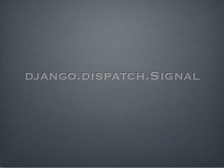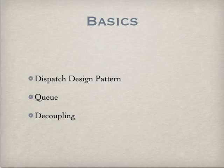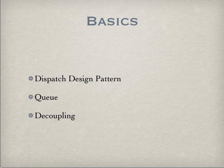In this screencast, we're going to talk about Django's Signals. It's a very fun topic — interesting and easy to understand once you get it. Django Signals is based on the dispatch design pattern, also known in other areas as the observer pattern. Basically, it queues up functions that need to be called at a later time, which is especially great for decoupling your code so nothing is tied too strongly to other parts.